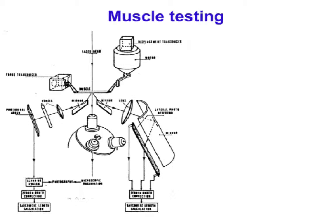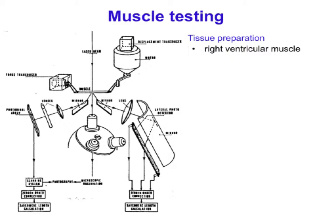So tissue preparation is a big problem—you can't extract a nice, thin, elongated, parallel-fibered preparation. The most common preparation for testing muscle mechanics, and the one giving the best biomechanical results, are trabeculi, which come typically from the right ventricle. The inner surfaces of the ventricle contain small projections of cardiac muscle that often have little bits of valve attached to them.